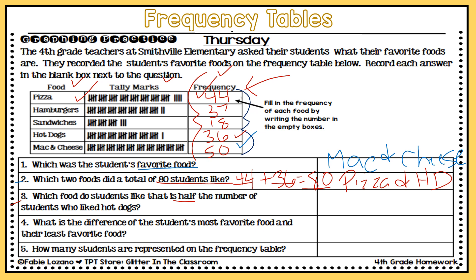Question three: which food do students like that is half the number of students who liked hot dogs? Hot dogs is 36, so I've got to find a number that is half of 36. I'll let you figure that out — what is half of 36? That would be the answer to this question.